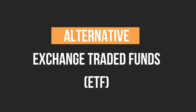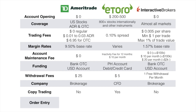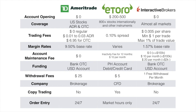Although TD Ameritrade and Interactive Brokers do not have the copy trading feature, one alternative is to invest in exchange traded funds. For order entry, TD Ameritrade allows you to enter orders 24/7 — before, during, and after market hours. For eToro, it used to be the same, but now you can only trade during eToro's market hours. For Interactive Brokers, it's also 24/7.